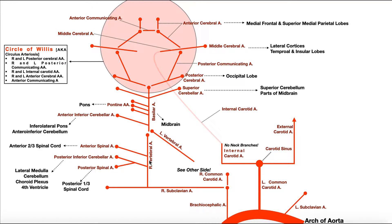The first part we're going to be looking at is the vertebral basilar system — the vertebral arteries, both of them, the basilar artery, and the branches that come off of those. The second part will be discussing the circle of Willis, but to really talk about those things we need to understand the sources of all of these arteries, going all the way back to the arch of the aorta.